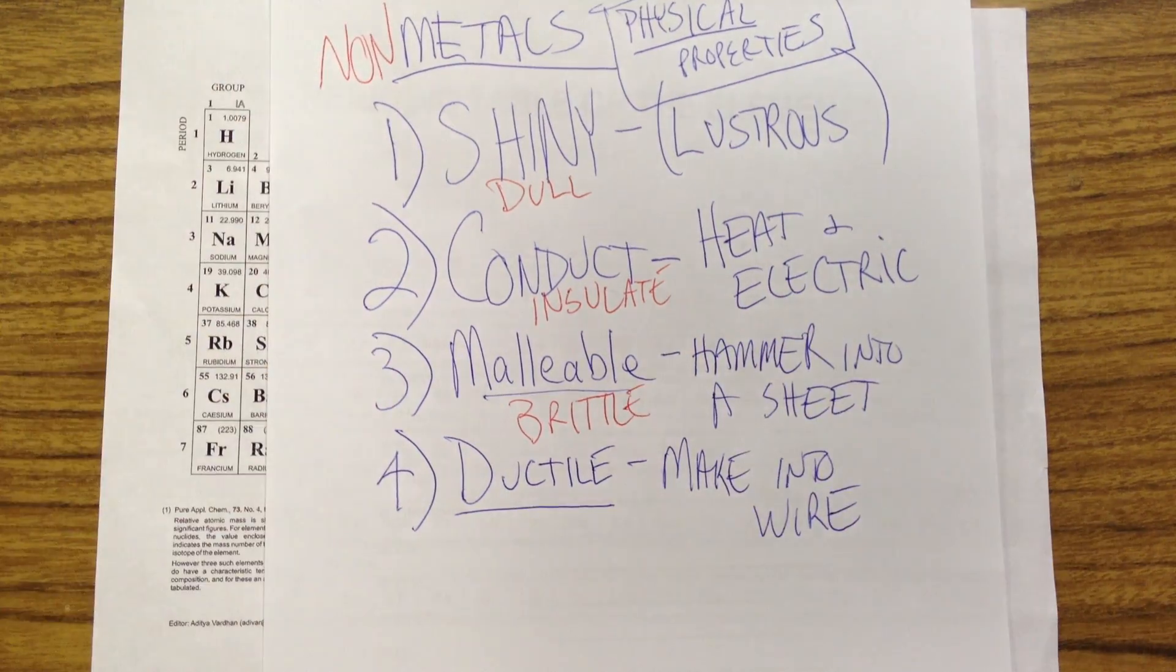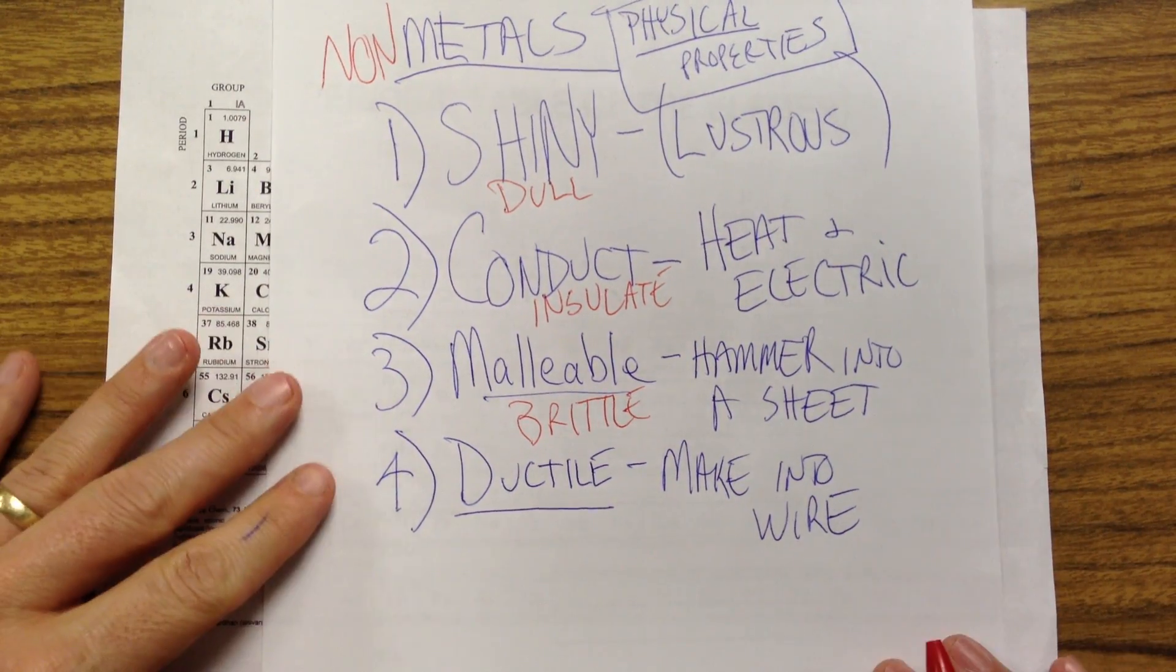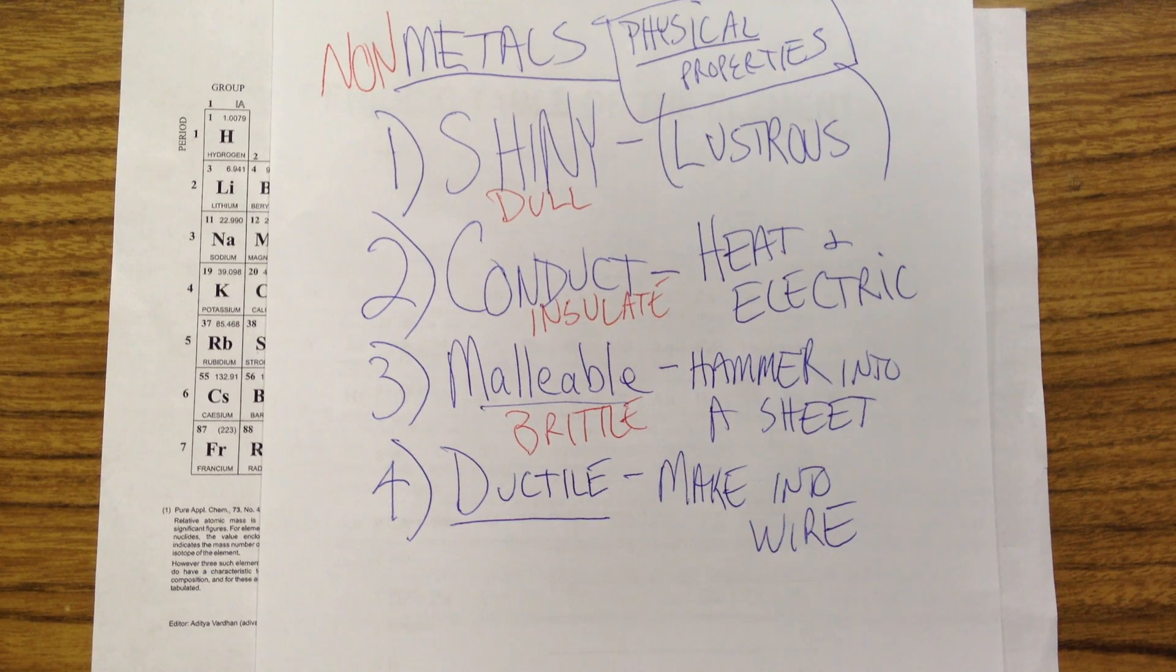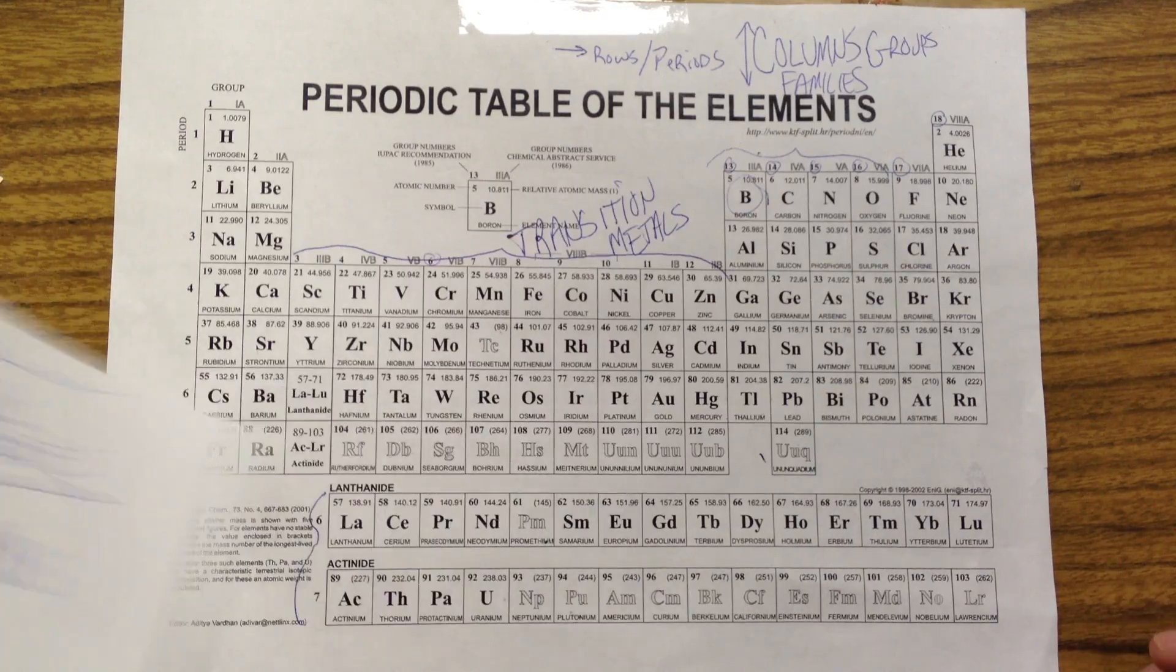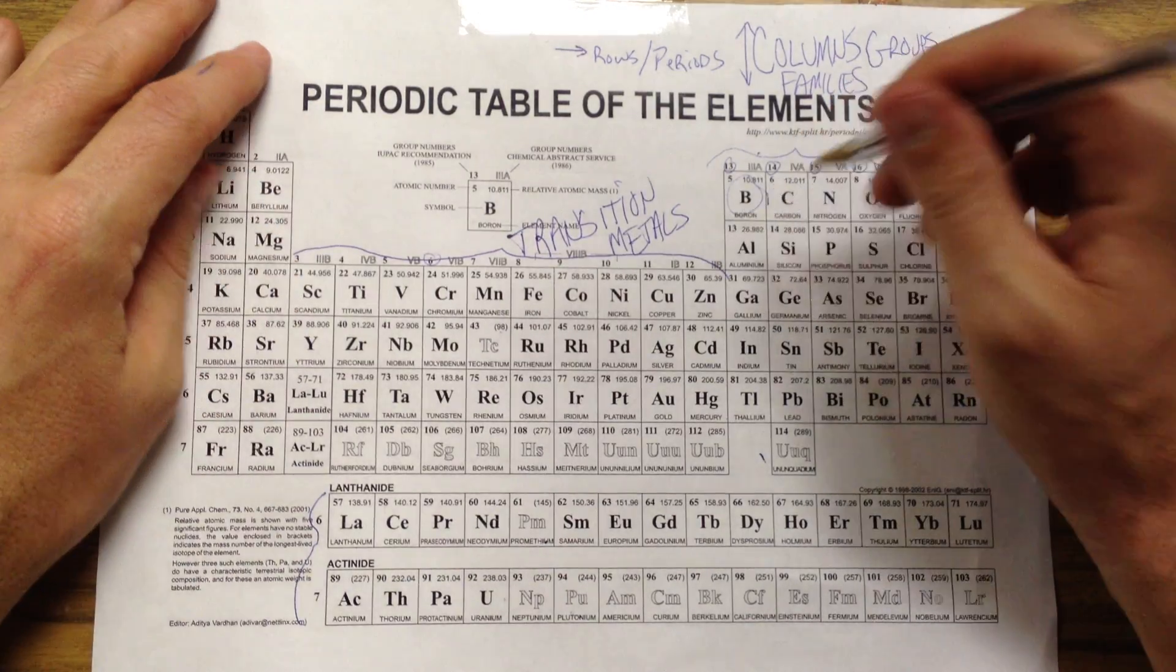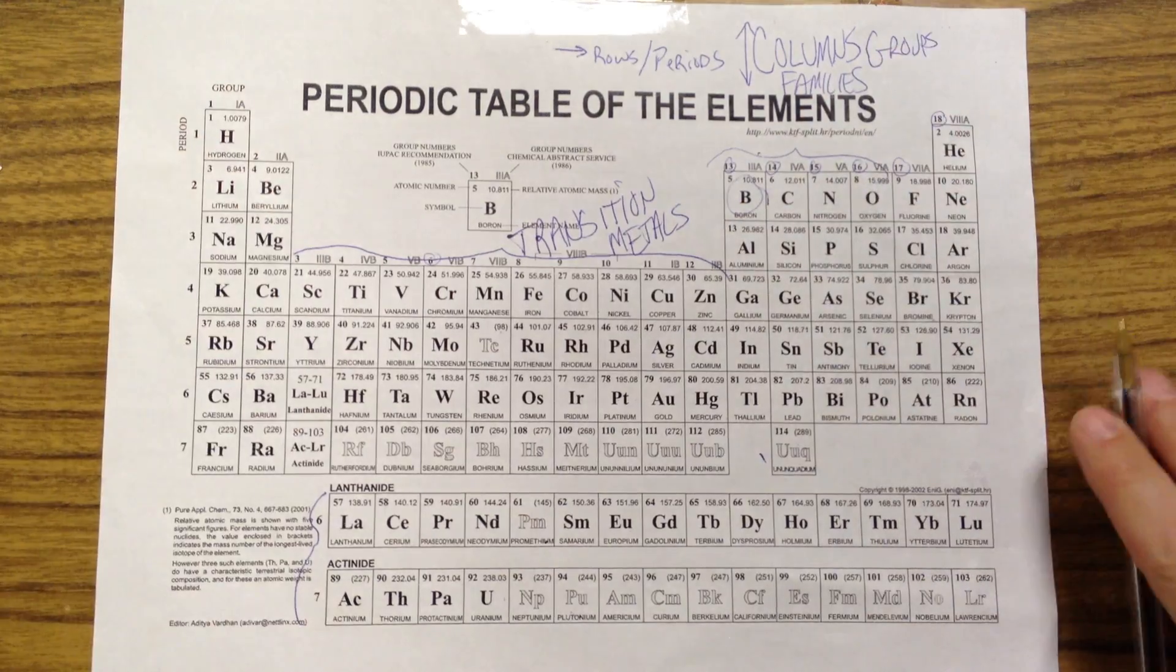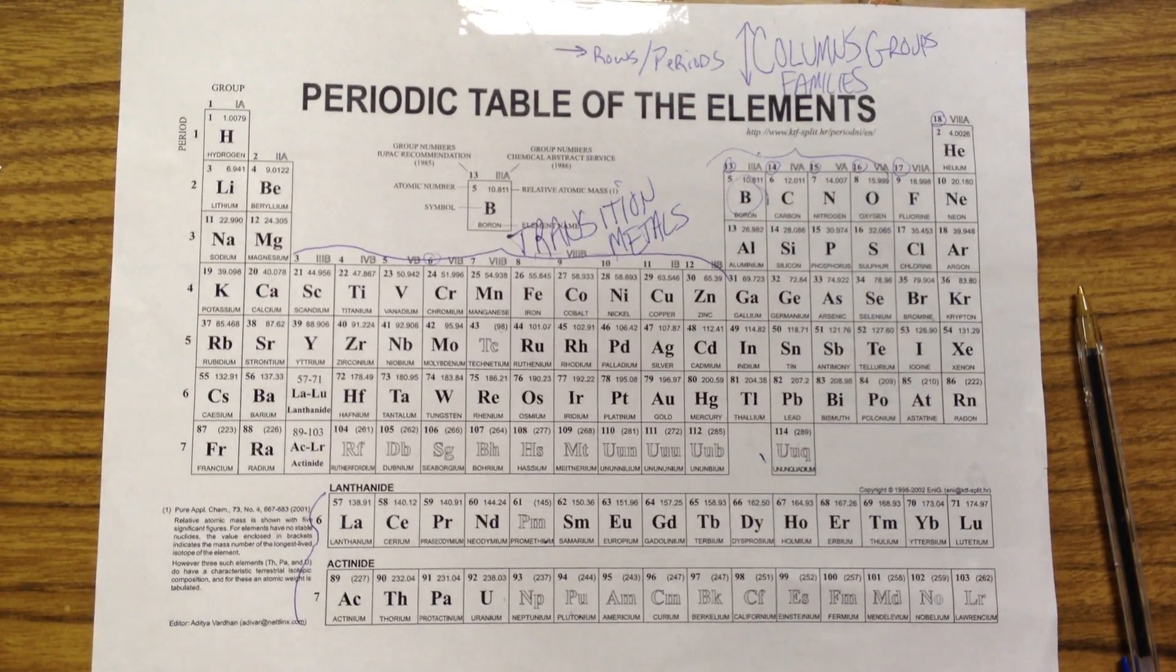So if you try to hit them or stretch them, they'll just crumble. And so that is the difference, some of the physical properties of metals versus non-metals. And on your periodic table, you should know that there is a dividing line between the metals and the non-metals.